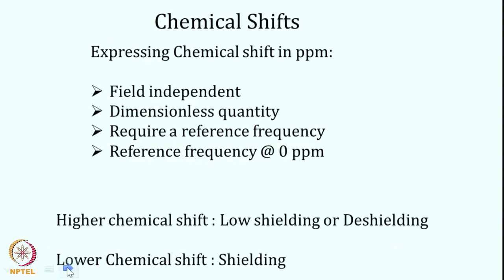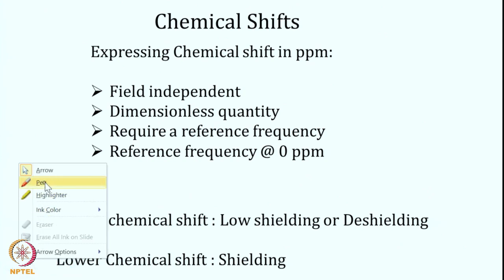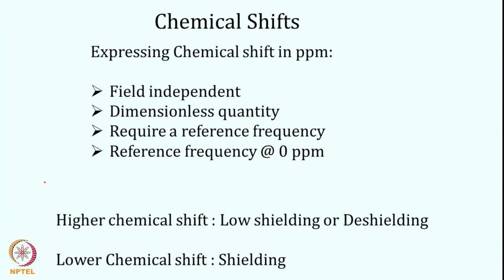Expressing chemical shift in ppm has merit: it removes field dependence, making chemical shift truly field-independent. Whether you record a spectrum at 600 MHz or 800 MHz, there is no field dependence — the ppm value is the same. This was not the case when chemical shift was expressed in hertz. Another important point is that since we are dividing two quantities with the same units, chemical shift in ppm is a dimensionless quantity.